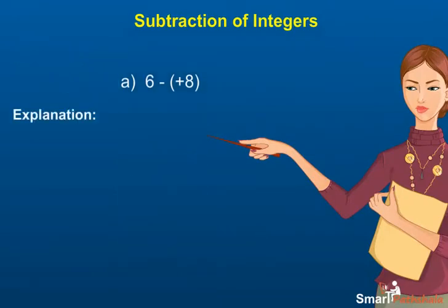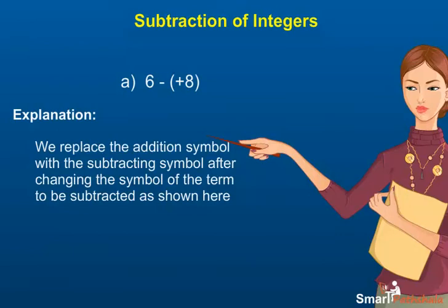Explanation: We replace the subtraction symbol with addition after changing the sign of the term being subtracted. (a) 6 - (+8) = 6 + (-8) = -2.